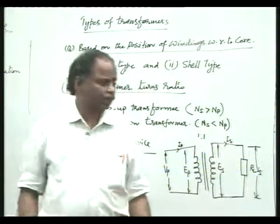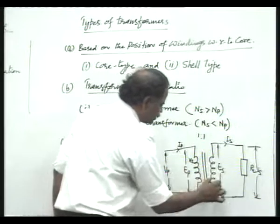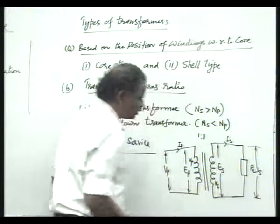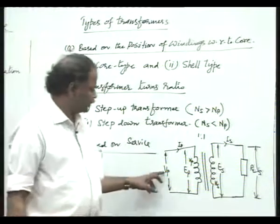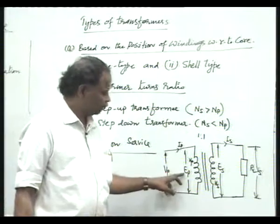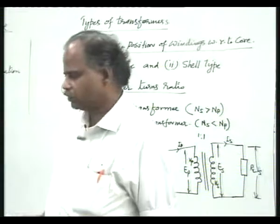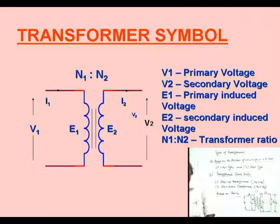So you have all the details in the transformer symbol: primary voltage, primary current, induced EMF in the primary, secondary voltage Vs, secondary current IS, and induced EMF in the secondary winding. Number of turns on the primary side is represented by Np and number of turns on the secondary by Ns. They are also designated as v1 instead of Vp, e1 instead of Ep, and i1 in place of Ip — the difference is only in the designation.